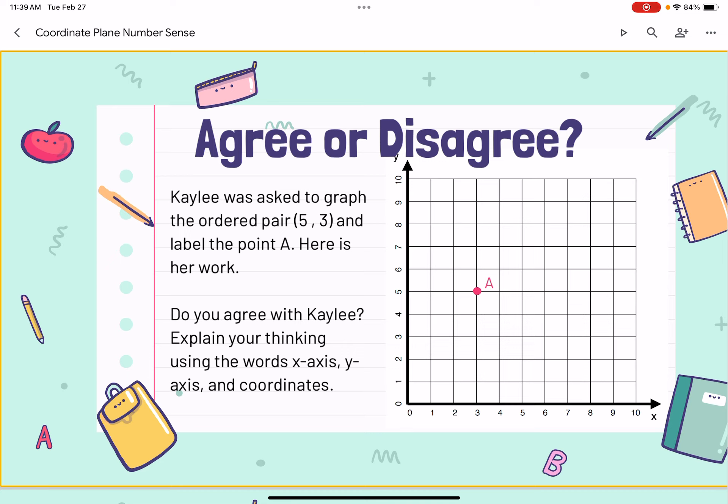Think. Do you agree with Kaylee? Explain your thinking using the words x-axis, y-axis, and coordinates. Give a silent thumbs up when you're ready to share with your group. Pause the video to talk with your group about whether or not you agree or disagree. Unpause when your conversations are over.